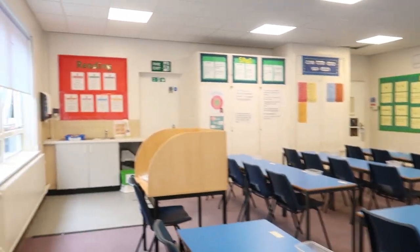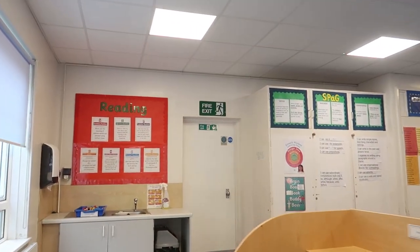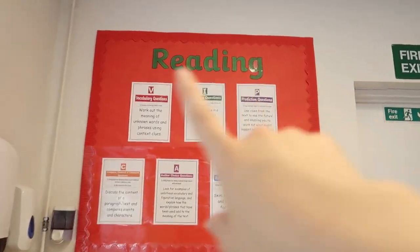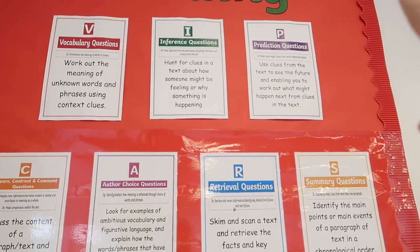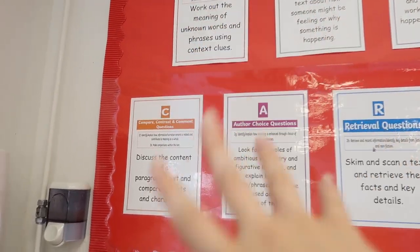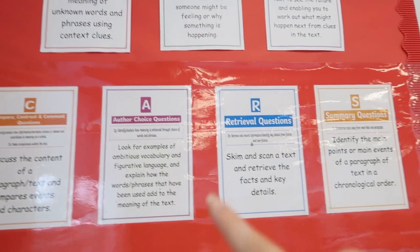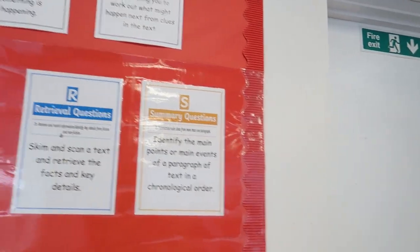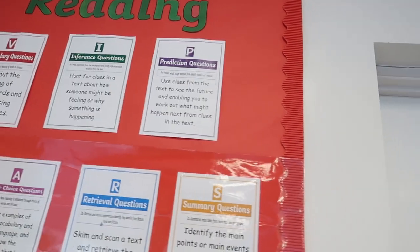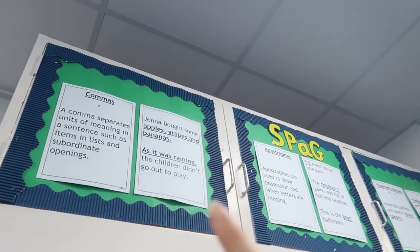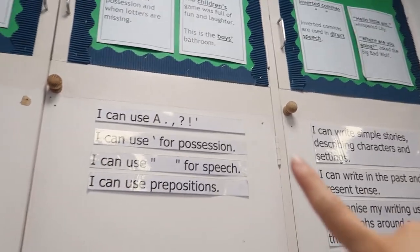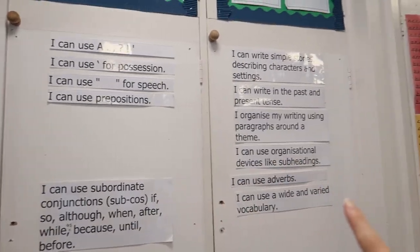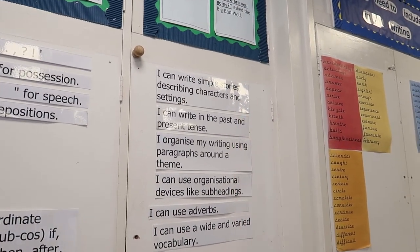We've also got the reading display - the VIPERS. If you don't know, that stands for vocabulary questions, inference questions, prediction questions, compare and contrast, author choice, retrieval questions and summary questions. It's all about comprehension and understanding the text that we're reading. We've got our growth mindset display, the different spelling, punctuation and grammar that we expect in Year 3, and school-specific things that we want to see in our writing.